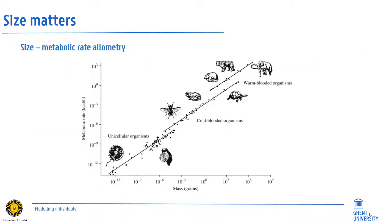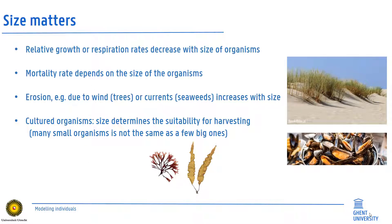Metabolic rate, for instance, is well known to be linearly related to size on a log-log scale. Metabolic rate decreases relatively with increasing size, making carbon losses through respiration more important for a certain biomass of smaller than larger organisms. Size additionally matters when demographic processes differ substantially among different size or age classes. Saplings have, for instance, a larger mortality than mature trees.